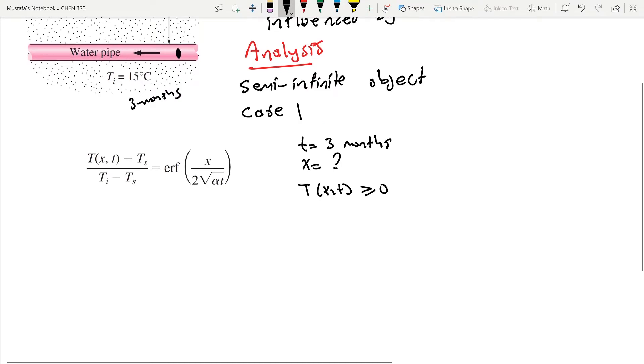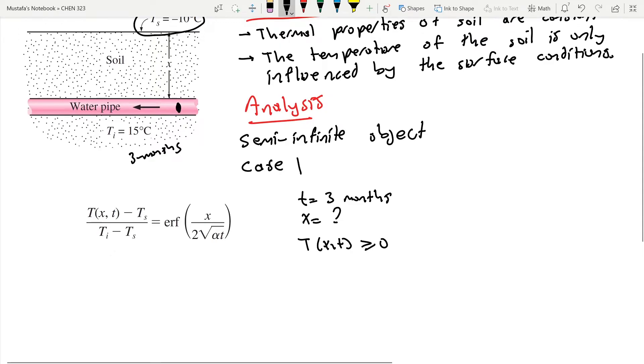So that means if I substitute these variables here, we have zero is T(x,t), which is the minimum temperature we can afford, minus T surface. T surface is minus 10 degrees Celsius, divided by T initial. Initial temperature everywhere in the soil is 15 degrees Celsius, minus minus 10 degrees Celsius. And this is equal to error function X over 2 alpha T in square root.